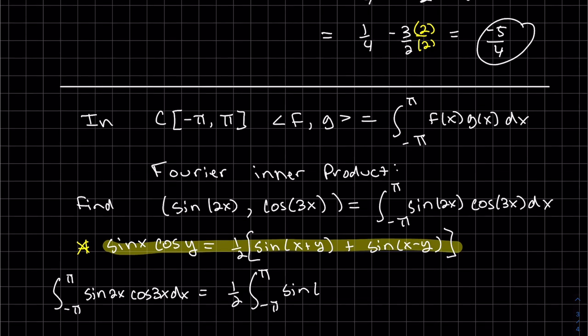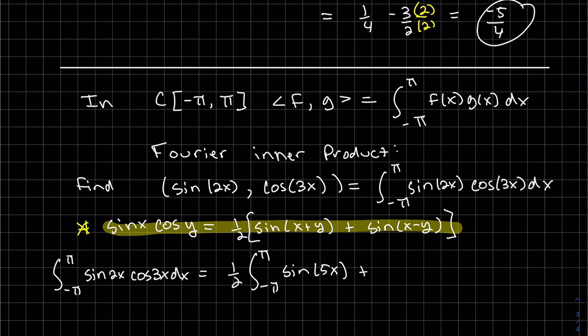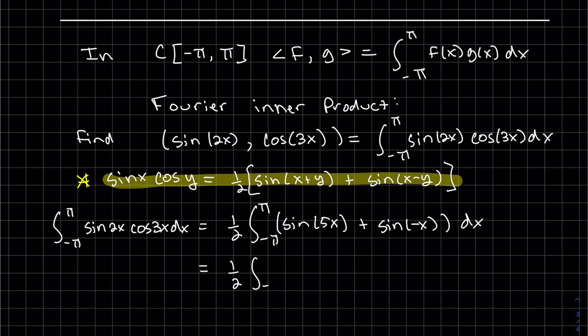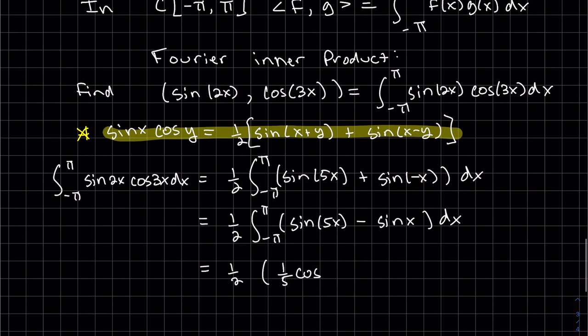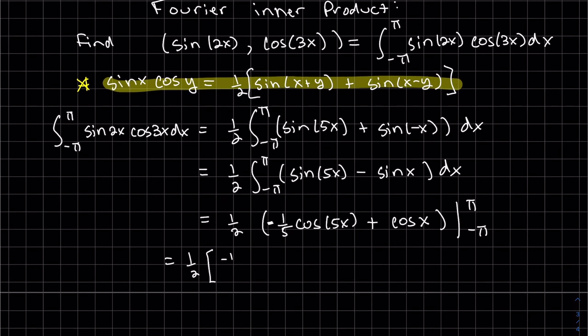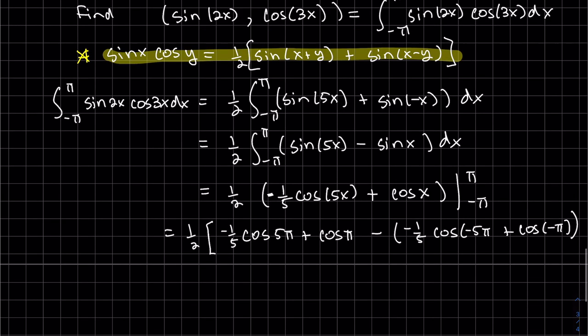So using that formula, pull the half out here. So the first one, we add the angles. The second one, we subtract the angles. 2x minus 3x. You can pull this out because it's an odd function. Integrate. So 5π and π. These negatives can disappear because these are even functions.